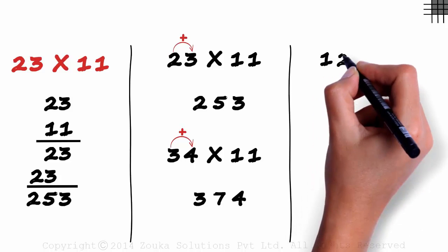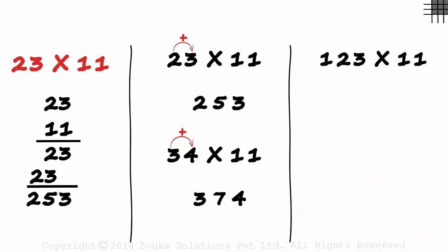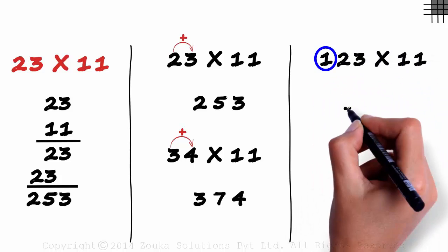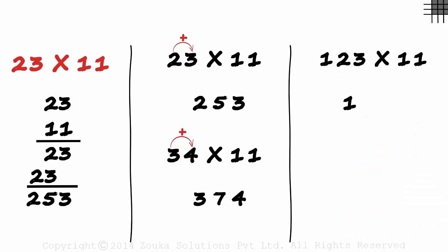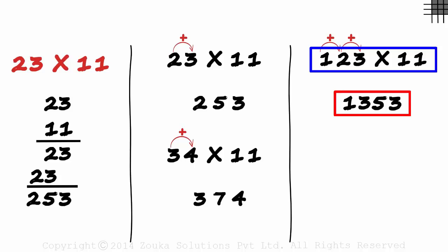Does this trick of multiplication with 11 work with 3 digit numbers as well? Let's try 123 times 11. First digit as is: 1. Then the sum of these two: 1 plus 2 is 3. Then the sum of these two: 2 plus 3 is 5. And the last digit as is. 123 times 11 is 1353. Have you seen a quicker way? I doubt it!